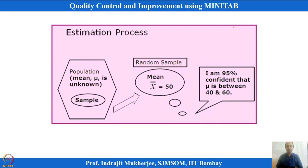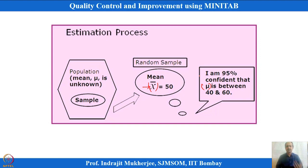From samples, we estimate parameters like x-bar (average values). We then want to extend that to determine where the population mean mu lies. For that, the concept of confidence interval is used, which we will discuss in the next session. We are taking samples, estimating means, and trying to define the population parameters.